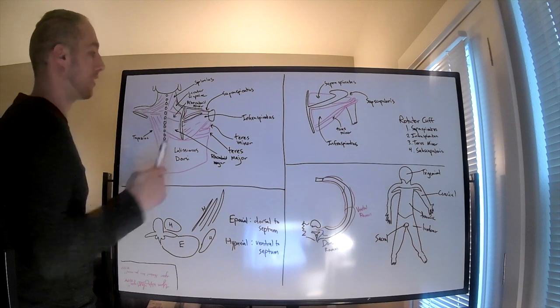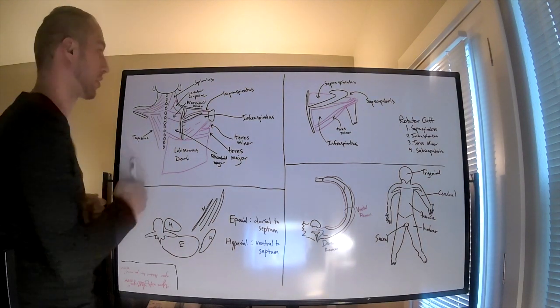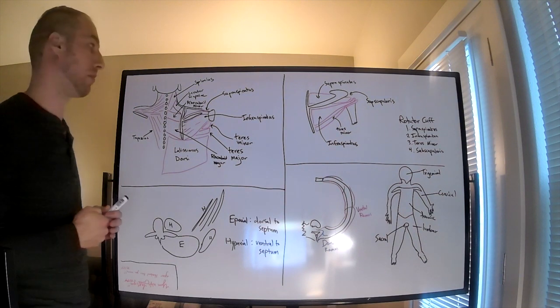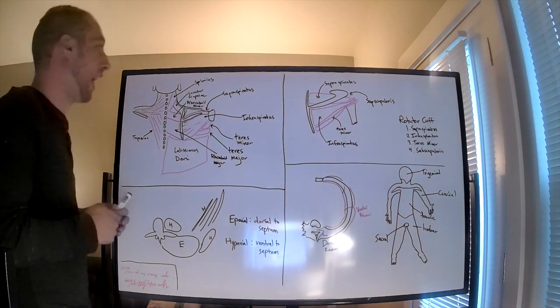The minor and major are important in shoulder retraction. The levator scapulae, as it would only be reasonable to assume, would be to elevate the scapula.